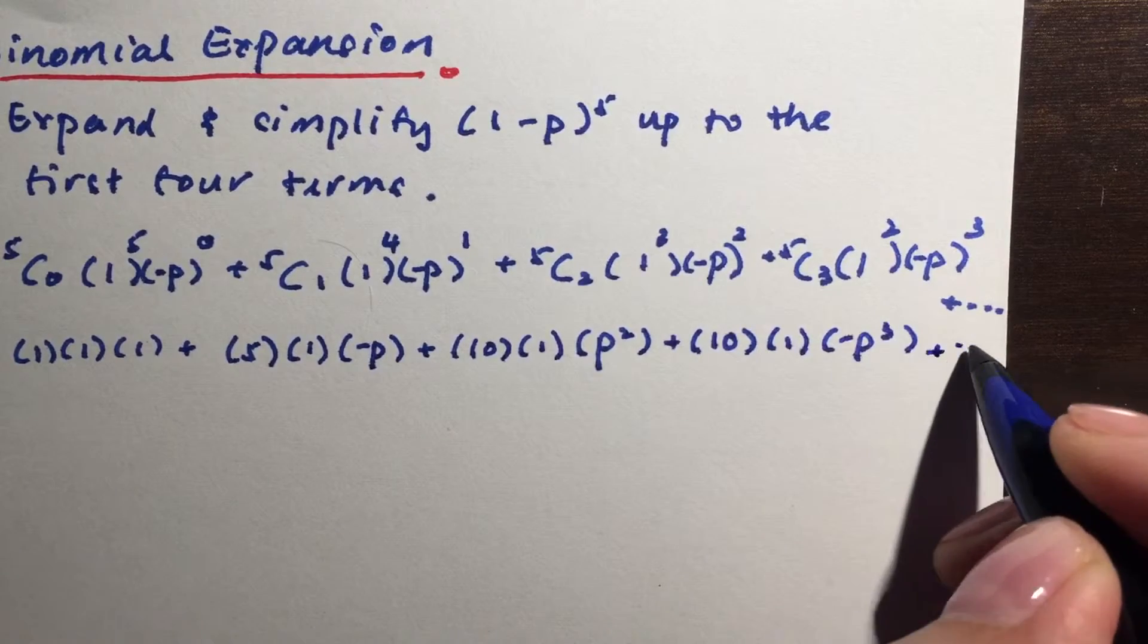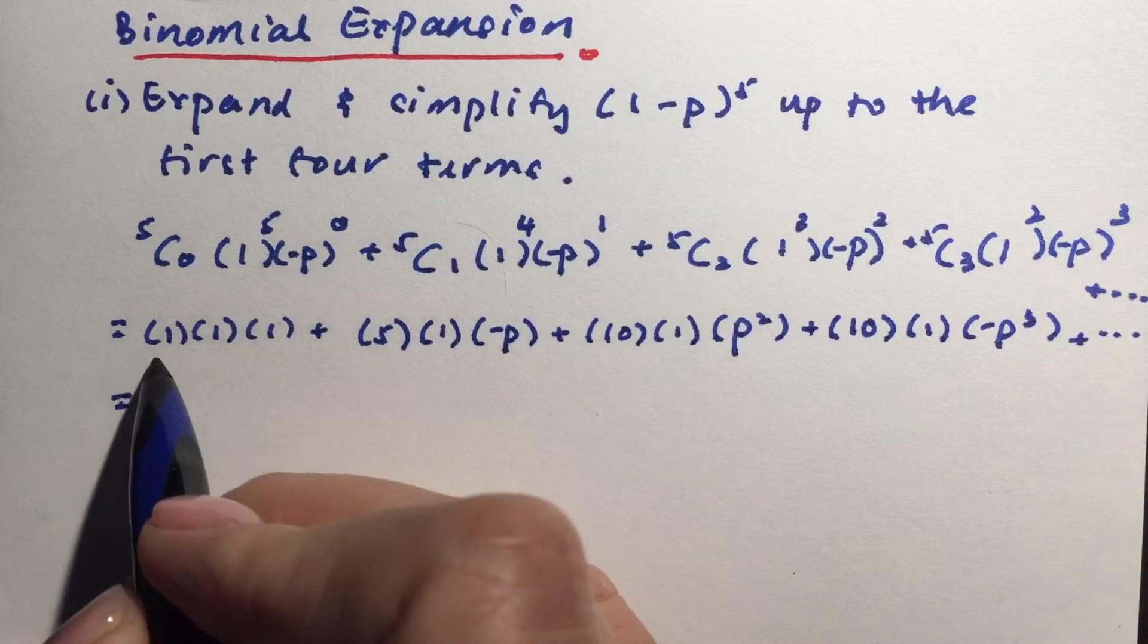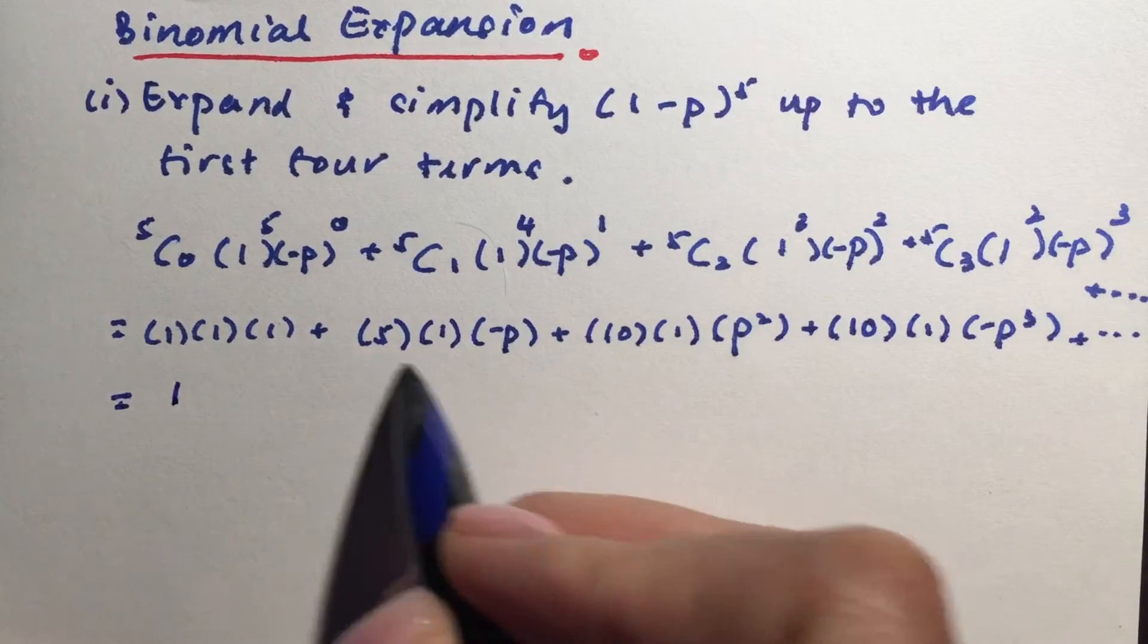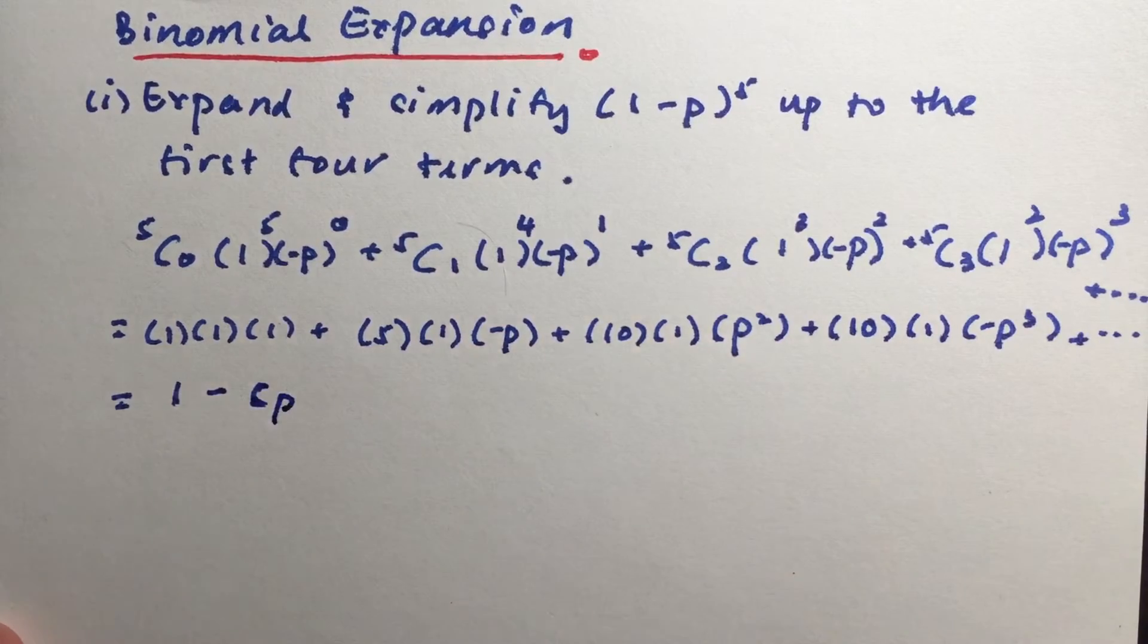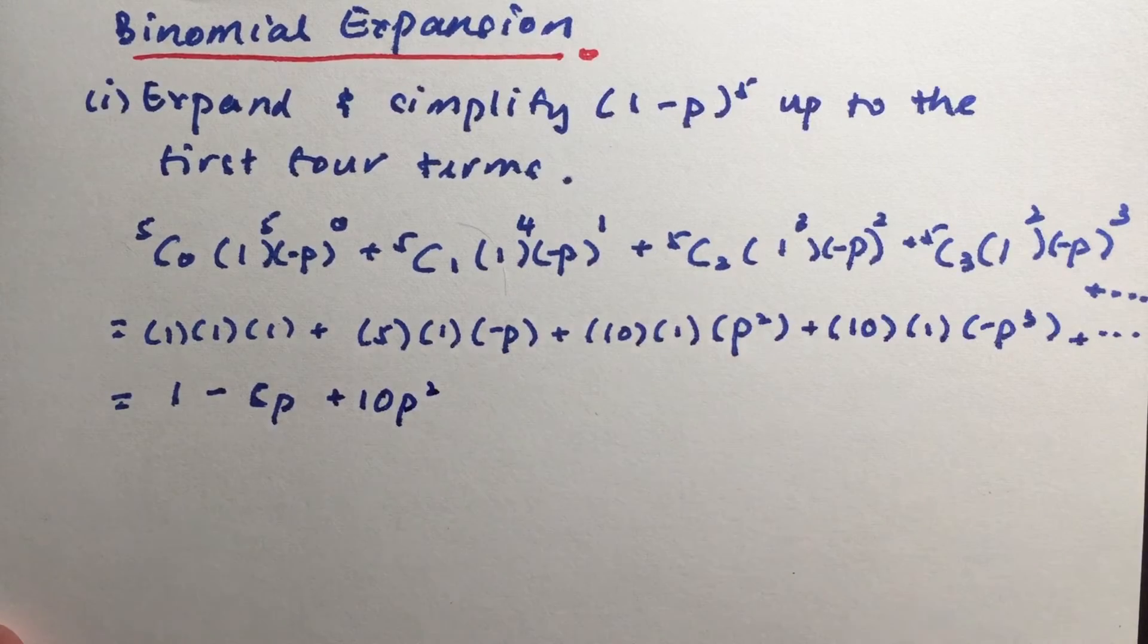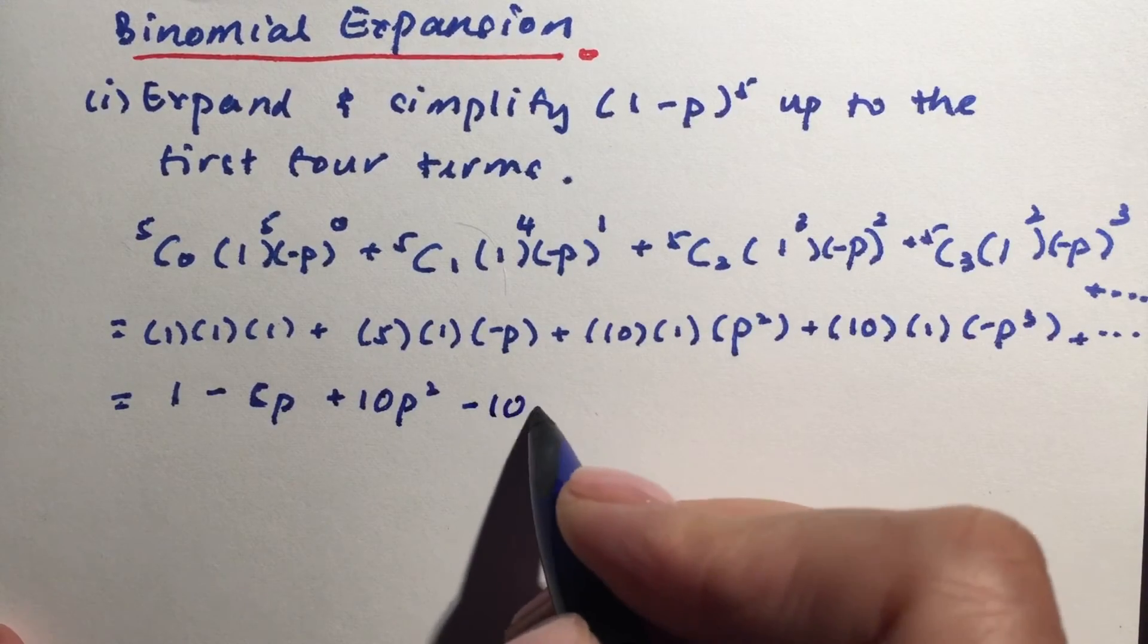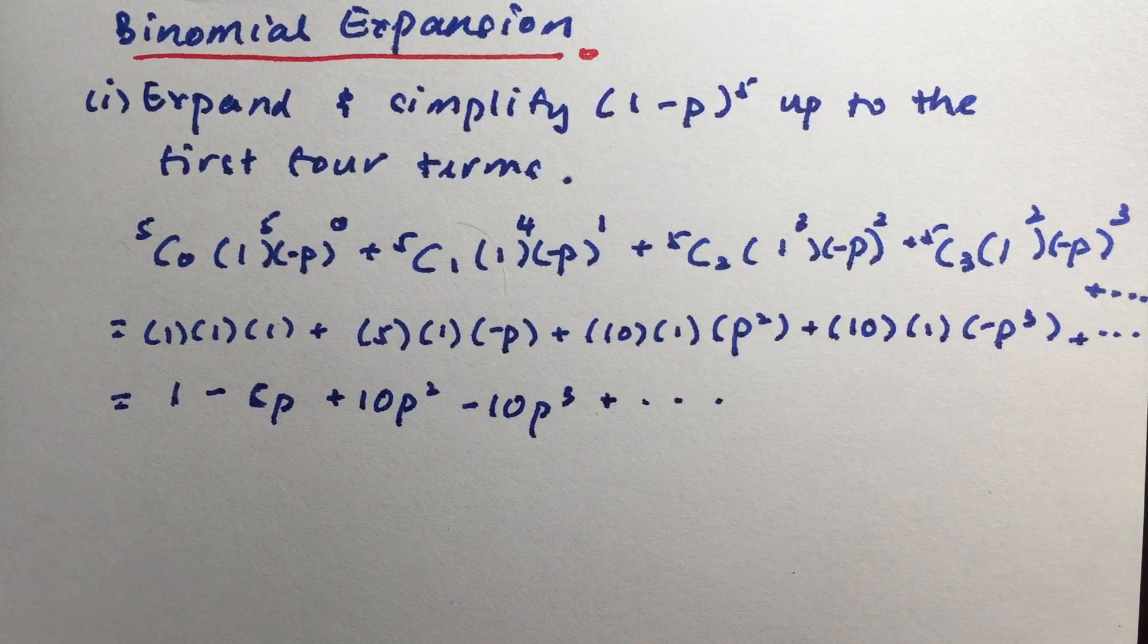Alright, so I'm going to put a dot, dot, dot. So this means it's going to go on. So all I have to do now is to tidy it up. So 1 times 1 times 1 is just 1. When I multiply this together, it's just -5P. And after that we will have +10P squared. And finally we have -10P cubed. So there you have it. This is how you do it as ancient.